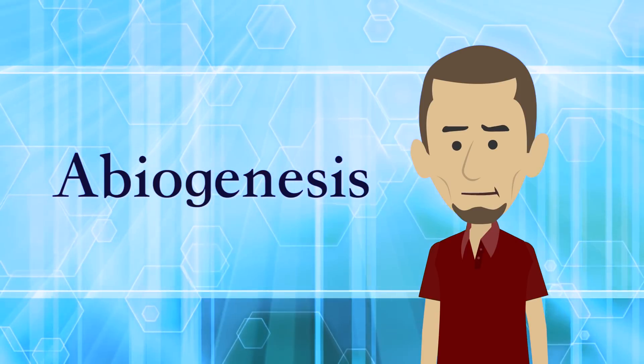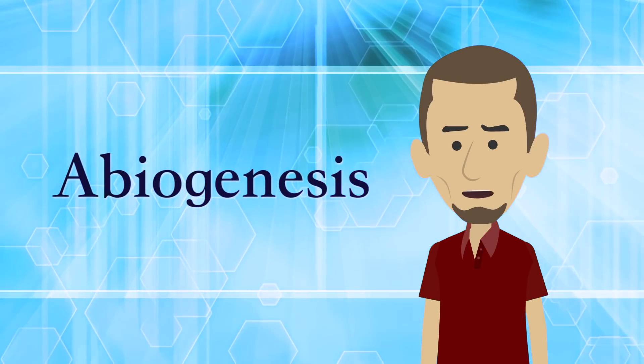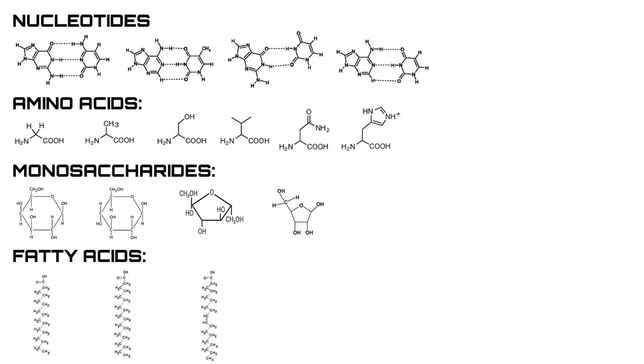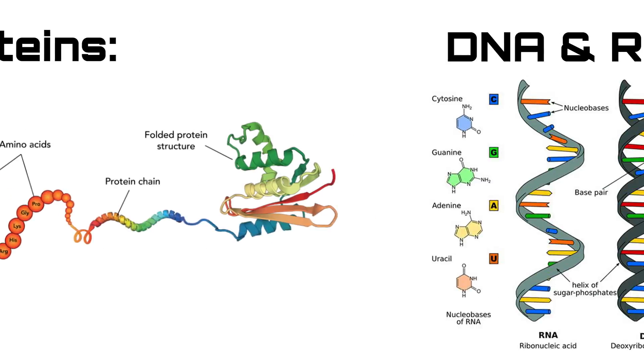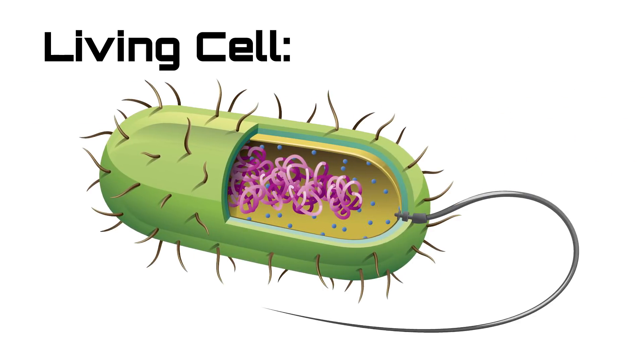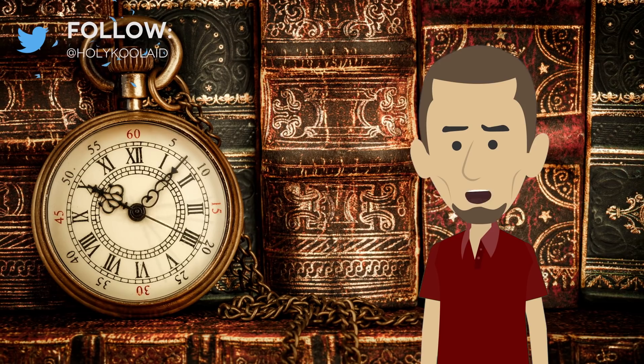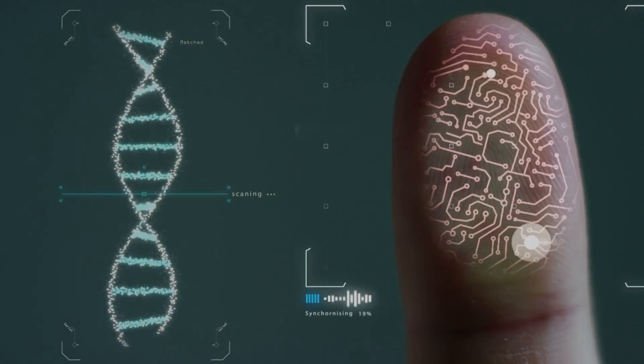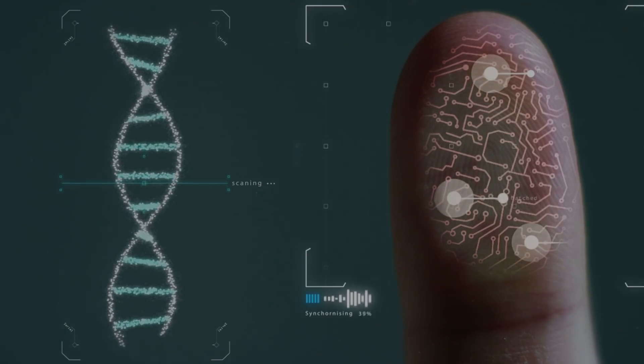What we're going to explore is the theory of abiogenesis. The theory that in the right circumstances, simple chemicals can naturally bond together to form organic molecules which organize themselves into living, evolving structures called cells. Given a big enough time span and enough generations, can we get from chemicals to humans? In order to answer that, we need to know what living organisms are made of.